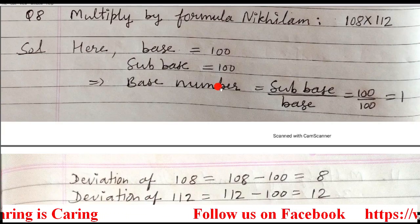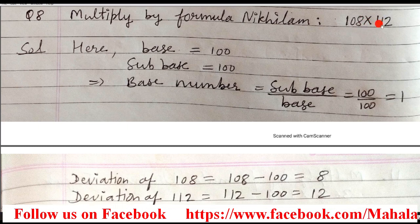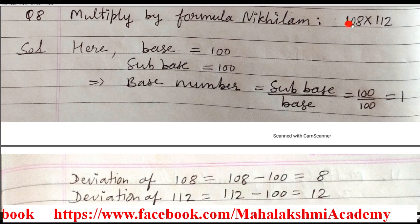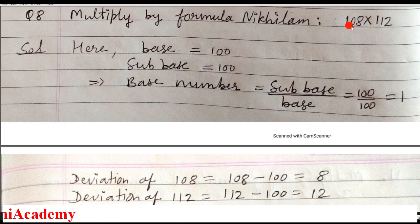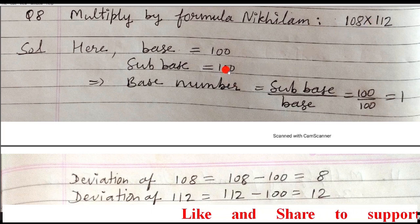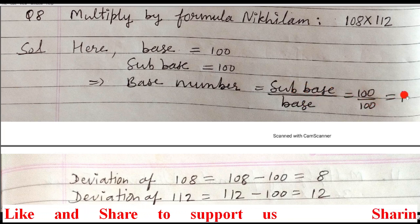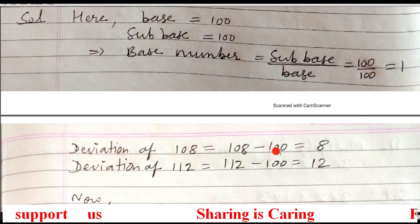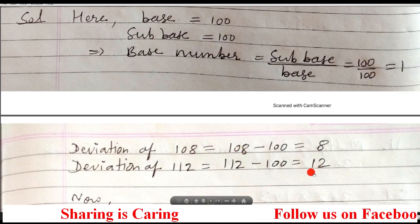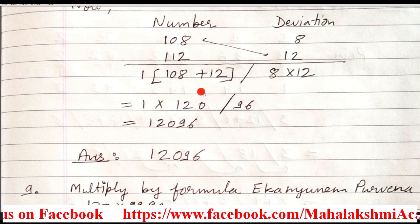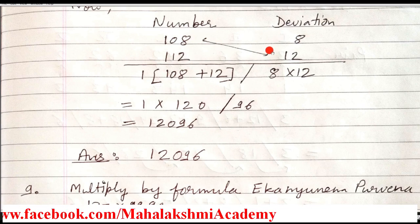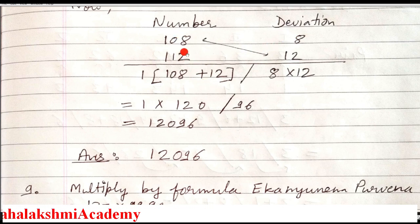The next example is also Nikhilam method. The numbers are 108 and 112. These are near to 100, and since the base is also 100, the subbase is also 100 — not 200 or 300. Base number is subbase upon base: 100 upon 100 is 1. Deviation of 108 is 8, and deviation of 112 is 12. You can take either 108 and 12 or 112 and 8 as the pair — the answer will be the same. Both give 120 when added.